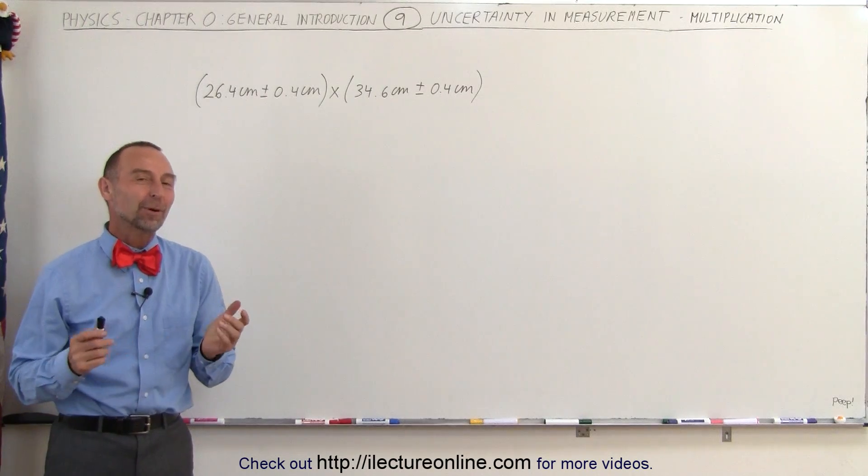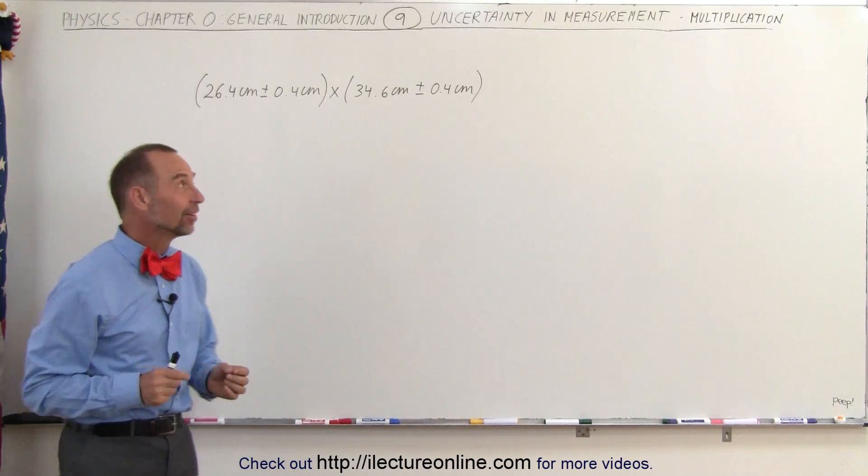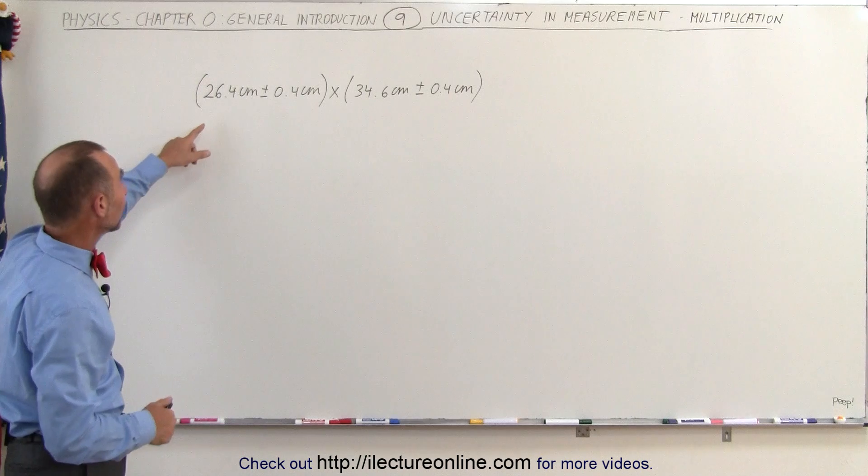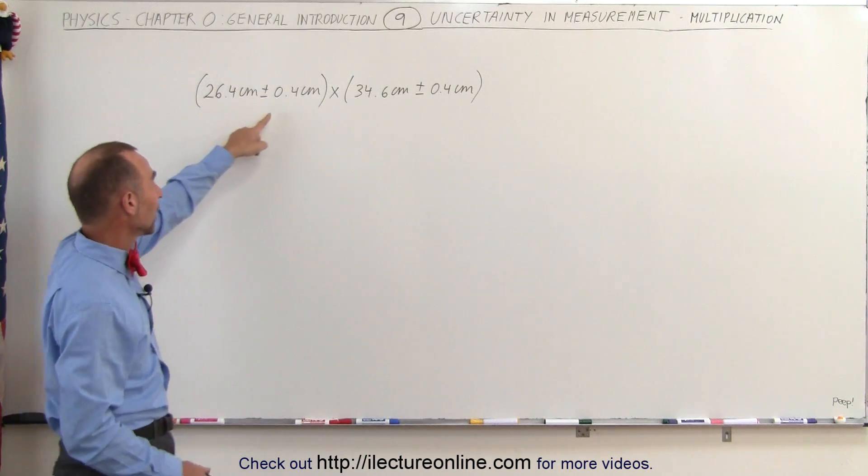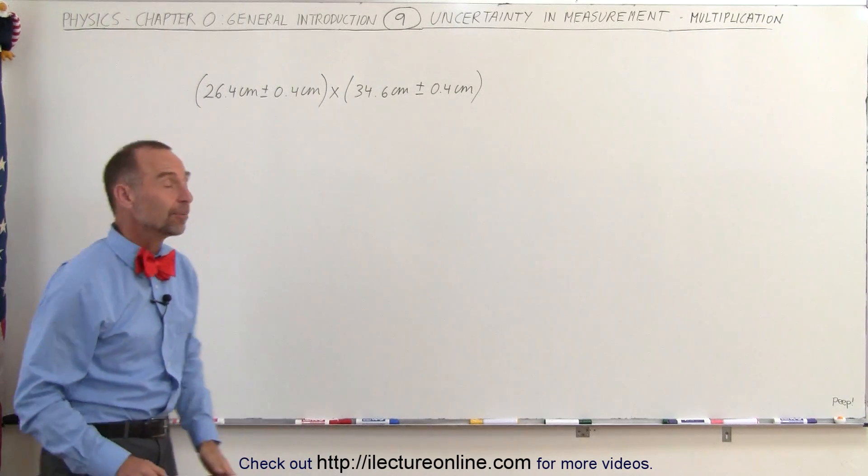Welcome to ElectronLine. Now let's see what we need to do when we multiply two numbers together that contain uncertainties. The rules are different from addition and subtraction. So here are the two numbers: 26.4 centimeters plus or minus 0.4 centimeters times 34.6 centimeters plus or minus 0.4 centimeters.